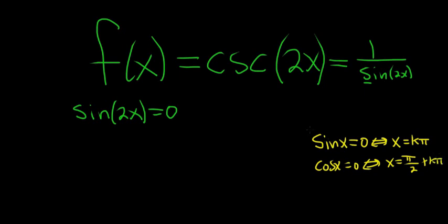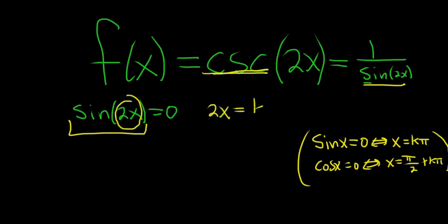So if you memorize these, you can do all of these problems. So in this case, we have the cosecant function, so sine is on the bottom. So that means sine 2x is equal to 0, so 2x is equal to k pi.